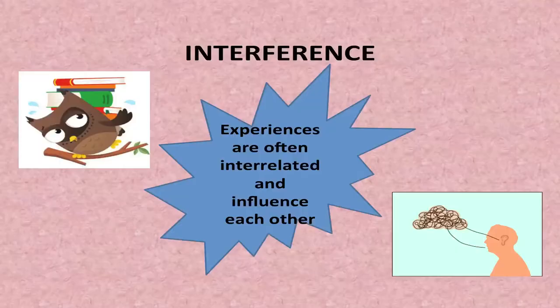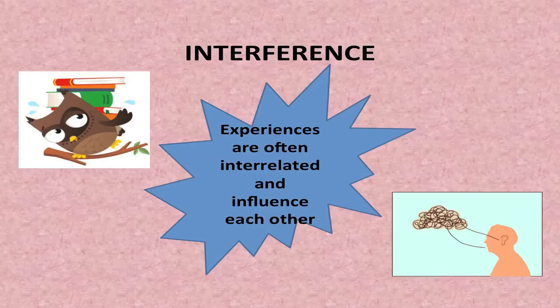Another cause of forgetting is known as interference. Whatever we learn, we learn in some context, so every experience of learning is preceded and followed by other experiences. These experiences are often interrelated and influence each other. When such influences are adverse — that is, they affect each other negatively — we call them interference.